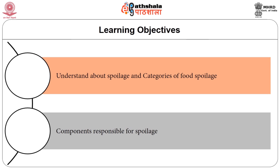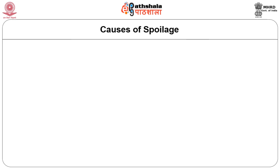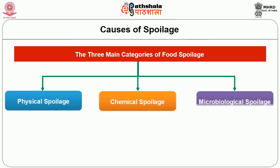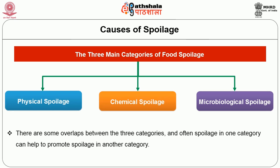On completion of the session, you will be able to understand about spoilage and categories of food spoilage, then components responsible for food spoilage. The three main categories of food spoilage that can occur are physical spoilage, chemical spoilage, and microbiological spoilage. There are some overlaps between these categories, and often spoilage in one category can help to promote spoilage in another category.